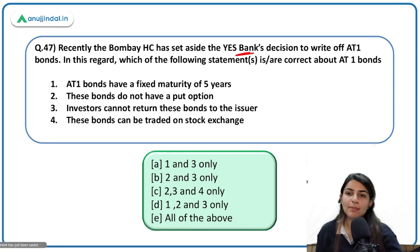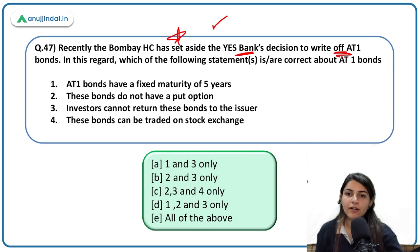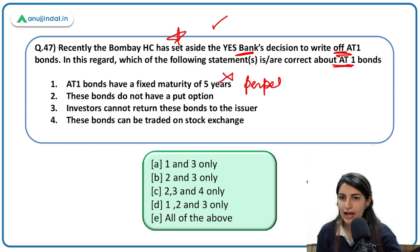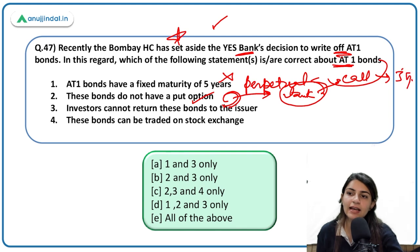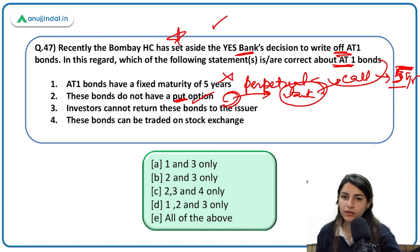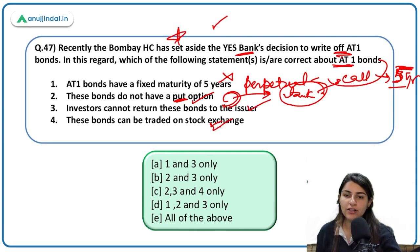Recently, Bombay High Court set aside Yes Bank's decision to write off AT1 bonds. About AT1 bonds: they have a fixed maturity of 5 years — incorrect; these are perpetual bonds with no fixed maturity. These bonds do not have a put option — correct; investors cannot ask for their money back from banks. However, banks can call these bonds, generally after 5 years. Investors cannot return these bonds to the issuer — correct. These bonds can be traded on stock exchanges — correct. So the first statement is incorrect; the rest are correct.